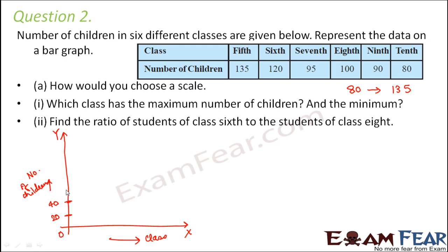Here, within a small length, we could accommodate all the values up to 140. Now let us start drawing the bars. For class 5th, we have 135 students, so the bar would go up till here. This would be the bar for class 5th. Then for class 6, we have 120 students. So let us draw the bar for class 6th.